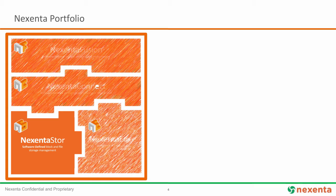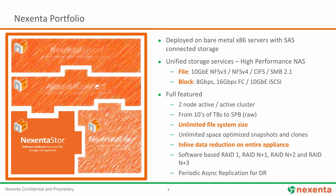Before we dig into the integration with OpenStack, let's look at the Nexenta portfolio. The first pillar product is Nexenta Store — a scale-up unified file and block solution that utilizes commodity hardware to give you enterprise-class performance. From the file side, you can use one or 10 gig connections for NFS and SMB, combined with 10 gig iSCSI or 8 or 16 gig Fibre Channel, all on a single platform. This platform gives you enterprise capabilities: snapshots and clones, unlimited for our file system, active-active clusters, and replication — all wrapped with OpenStack integration.